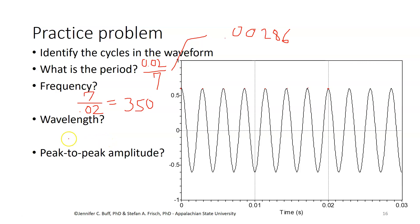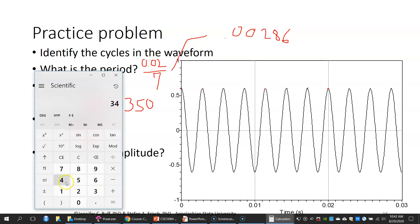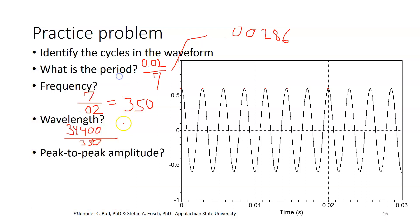If my frequency is 350, my wavelength is 34400 divided by that frequency, 350. 34400 divided by 350 is 98.3 centimeters.